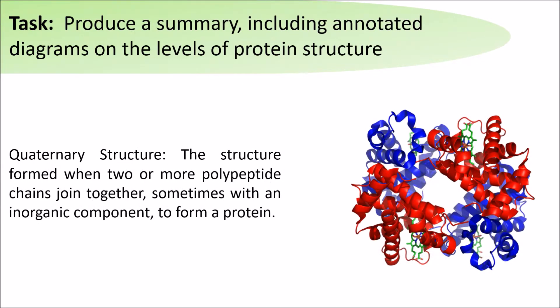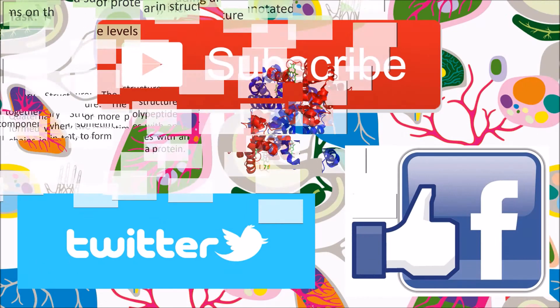The quaternary structure of a protein is formed when two or more polypeptide chains, or two or more tertiary structures, join together.